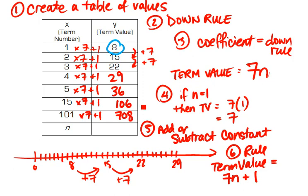You can see that it's much faster to do this with a rule than to continue the pattern. So for any figure n, my general rule will be 7n plus 1.